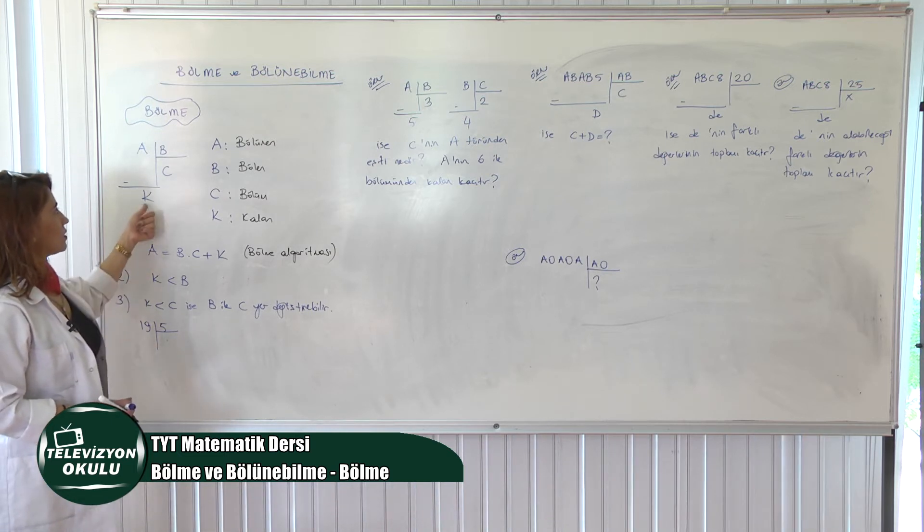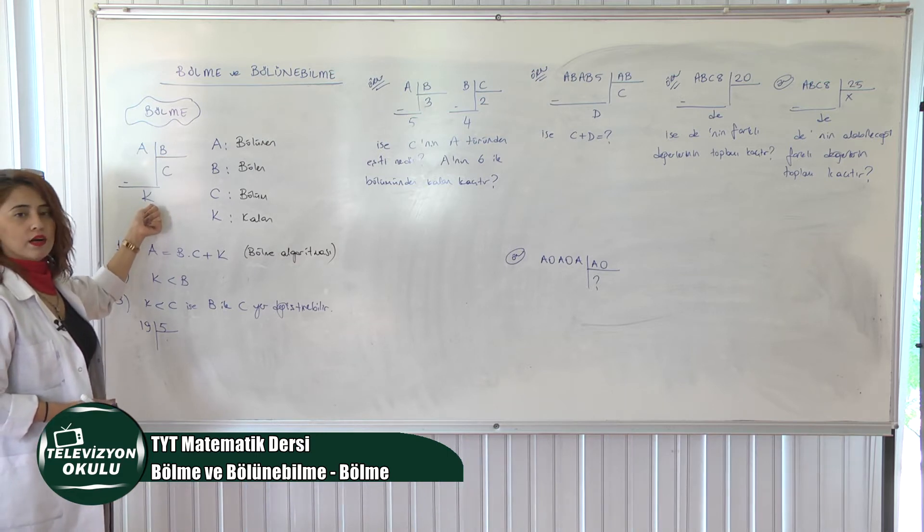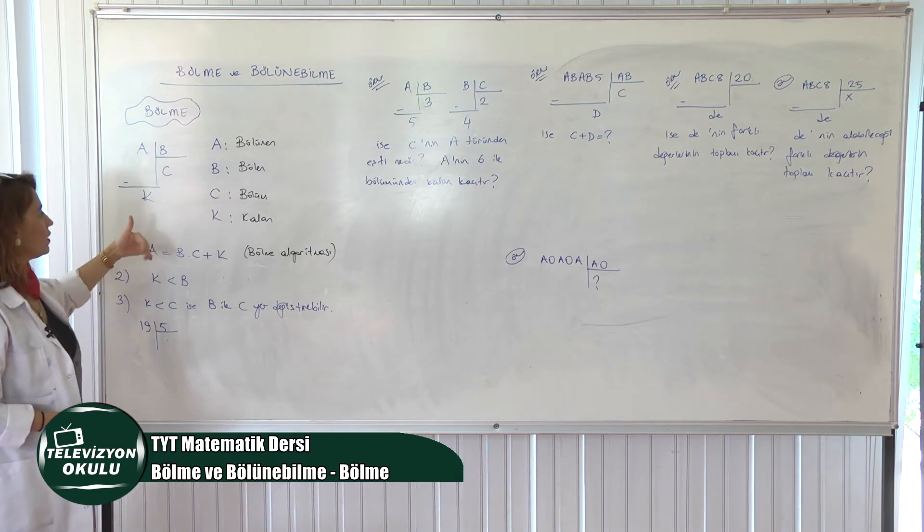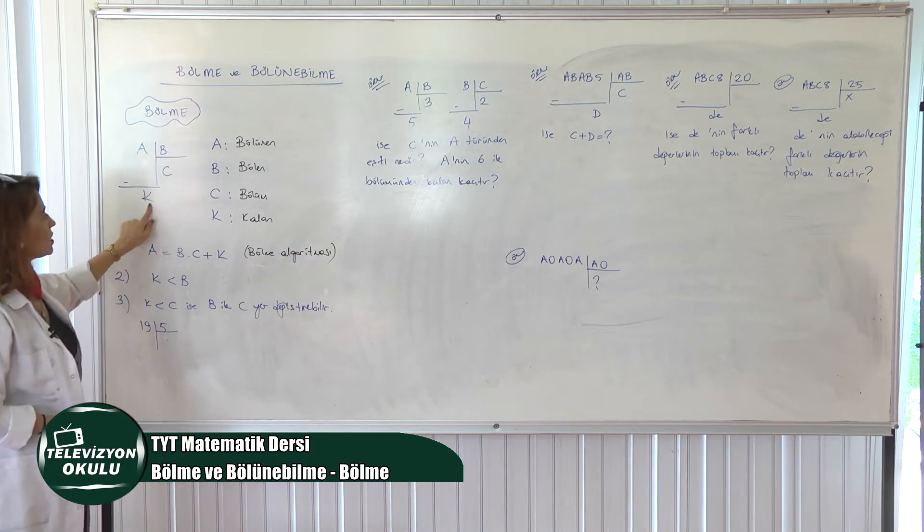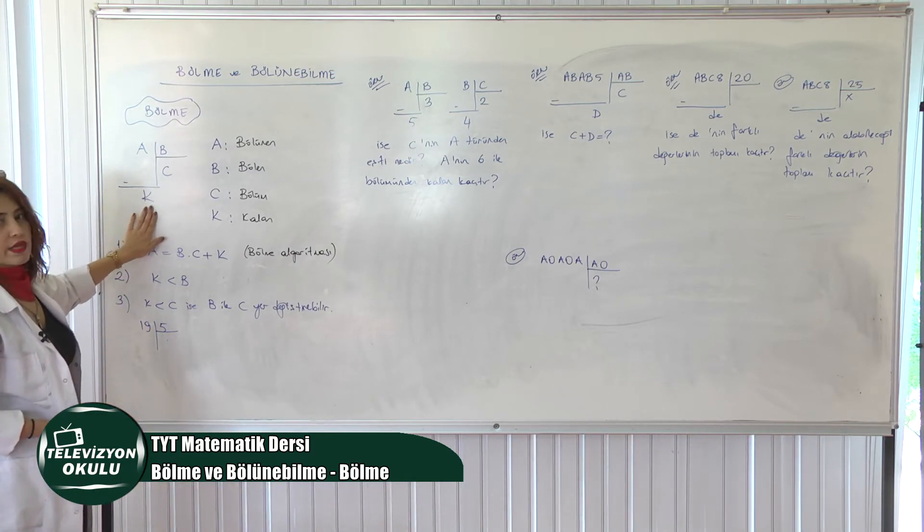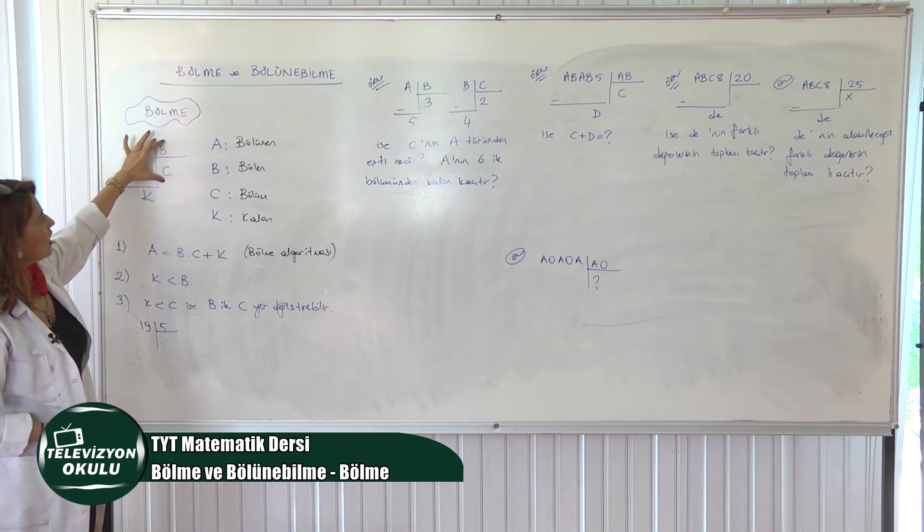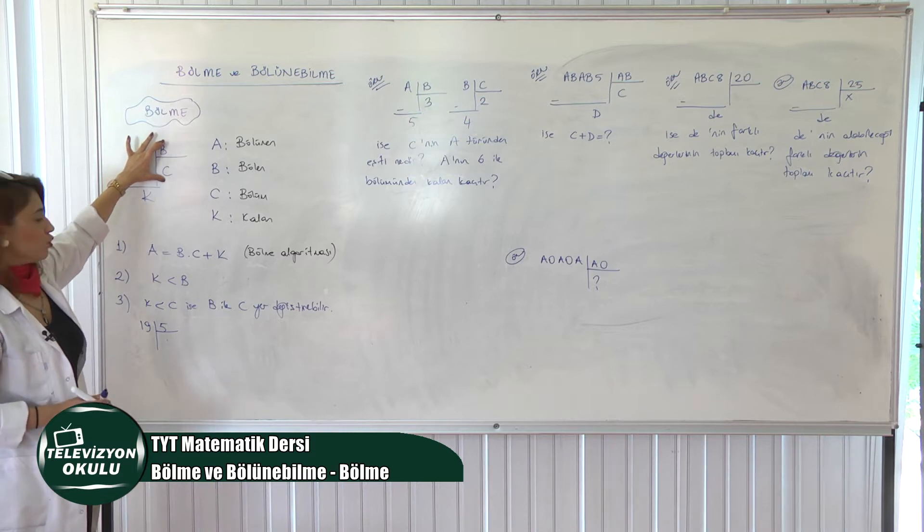İkincisi, kalan sayı her zaman bölenden daha küçüktür. Zaten daha büyük olursa ne olur? Bölme işlemine devam edilir. Ta ki kalan bölenden küçük olana kadar. Üçüncüsü, eğer K sayısı C'den daha küçükse, bakın K C'den küçük ise B ile C yer değiştirebilir. Bölenle bölüm yer değiştirebilir. Bu önemli bir özellik.